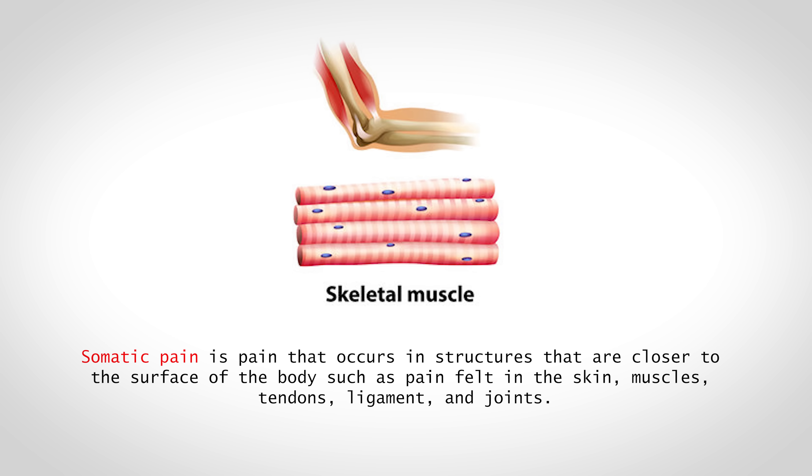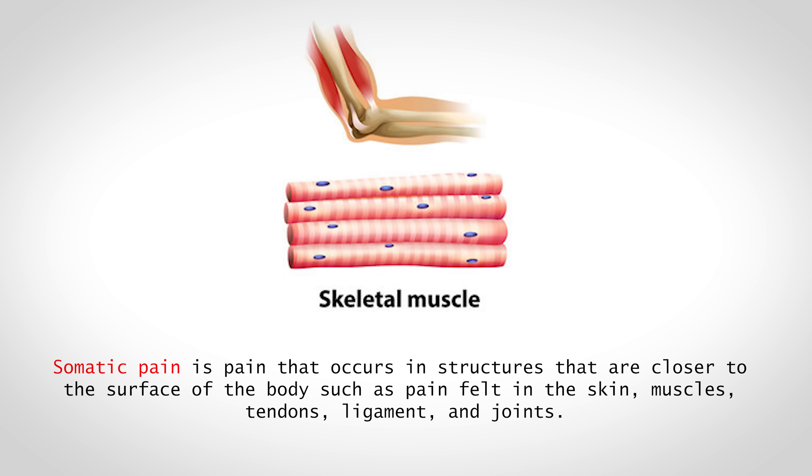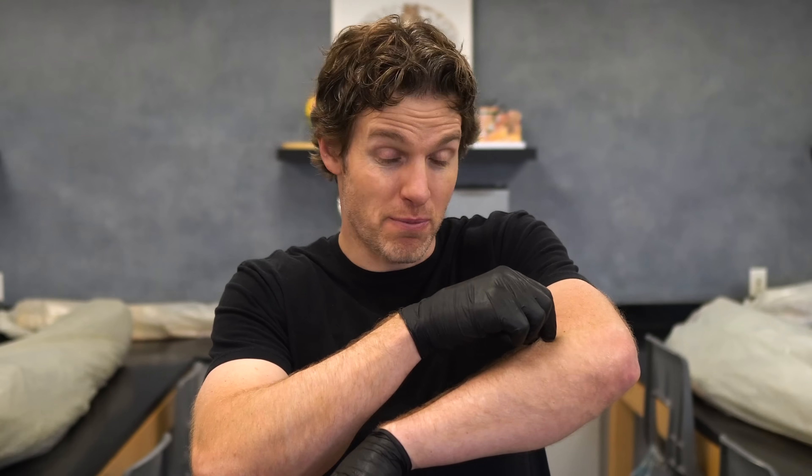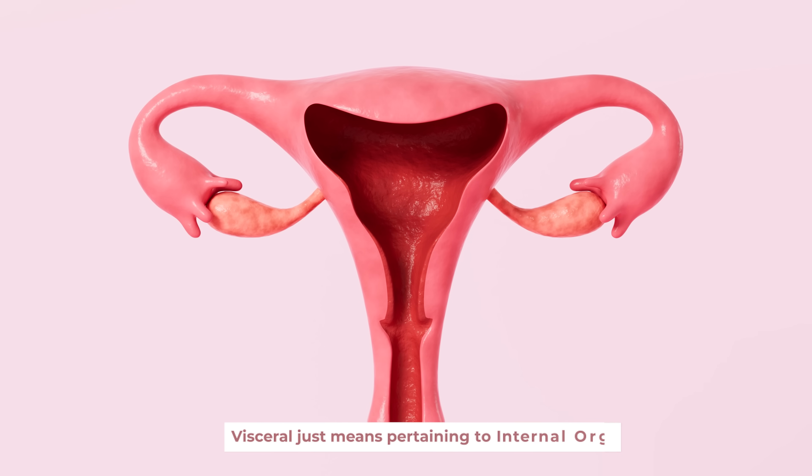Coming back to why you cannot simulate menstrual cramping pain in men: the most obvious reason is that they don't have a uterus. But even if you put TENS units on a female, she would tell you that the pain from the TENS units is different from menstrual cramping. The electrodes placed on the surface of the body cause pain in the skeletal muscles, and that type of pain is called somatic pain. Somatic pain occurs in structures closer to the surface of the body — skin, muscles, tendons, ligaments, and joints — and it is more pinpoint and less diffuse, meaning you can tell exactly where it's coming from.